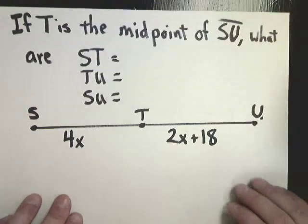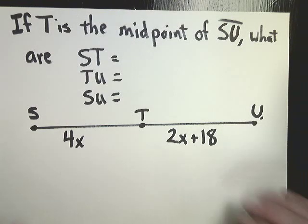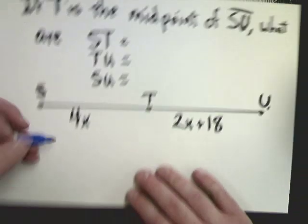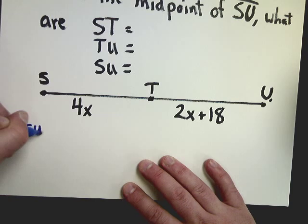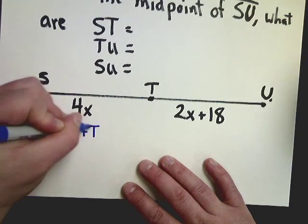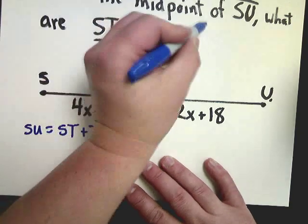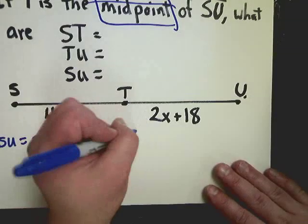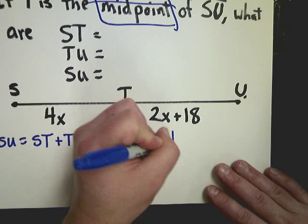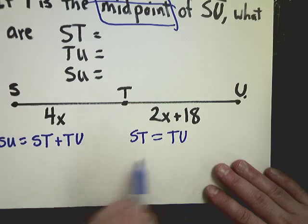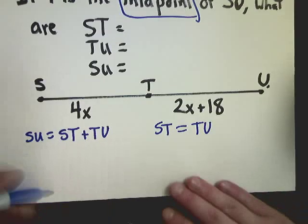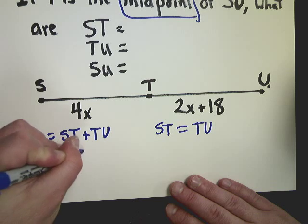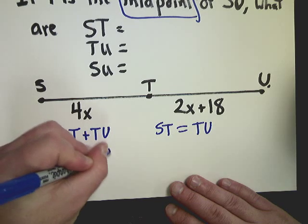One more type. This is very similar. If T is the midpoint of SU, what are ST, TU, and SU? Once again, I'm going to make a statement about SU being equal to ST plus TU. And since it's a midpoint question, I'm also going to make a statement about ST being equal to TU. And I'm going to plug in all the information that I can, 4x plus 2x plus 18.